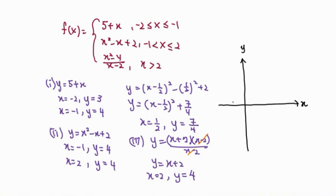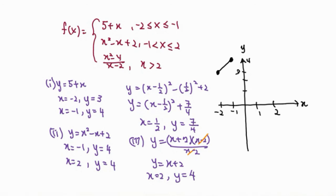Drawing the graph: starting from x equals negative 2, the y coordinate is 3, so this point is included. The ending point for the first piece is at x equals negative 1, y equals 4. Joining these two points gives a straight line, completing the first piece.